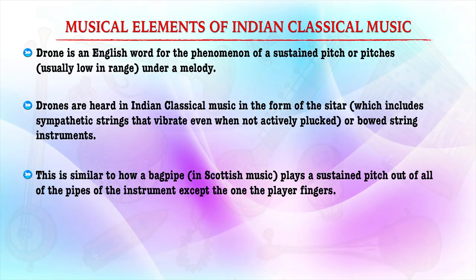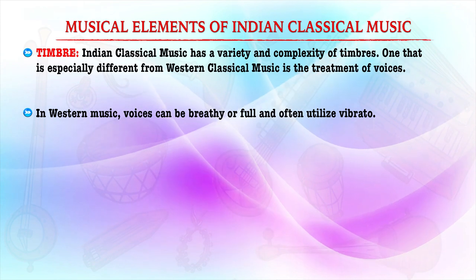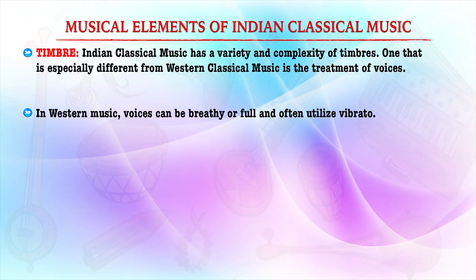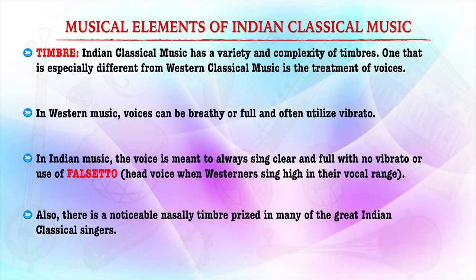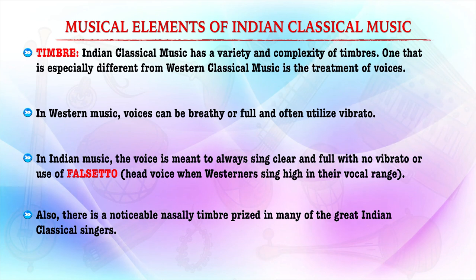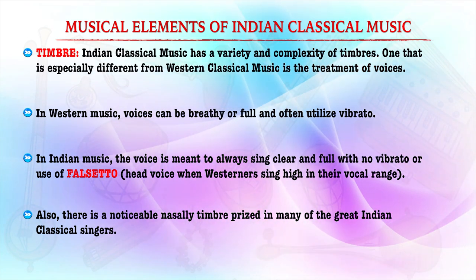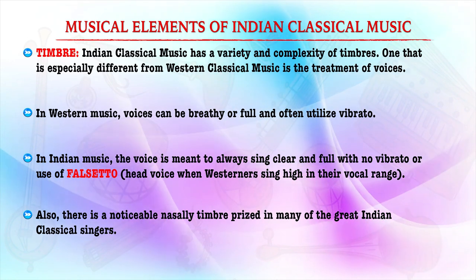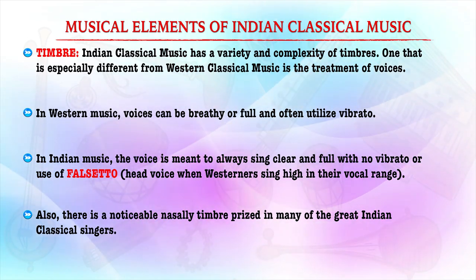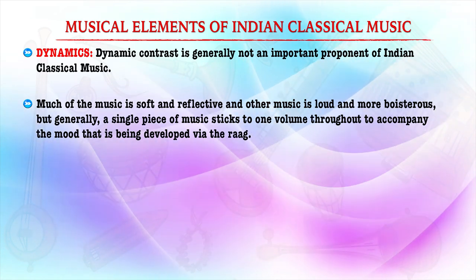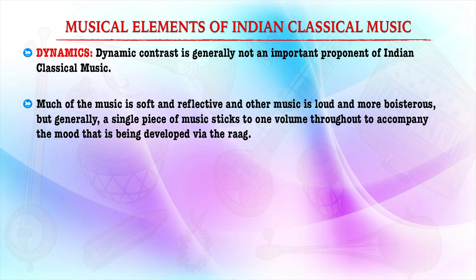Another important aspect of Indian vocal music is timbre. Indian classical music has a variety and complexity of timbres that are different from Western classical music in the treatment of voice. In Indian music, the voice is always meant to be sung clearly with no vibrations, whereas in Western music the vocal range is very high. Indian classical music has a lot of dynamism — it can be soft and reflective on the one hand, and very bold and loud depending upon the type of performance.